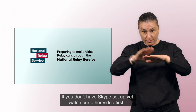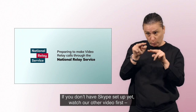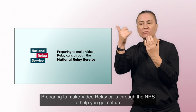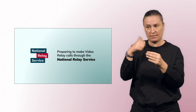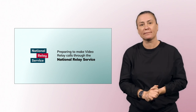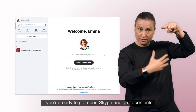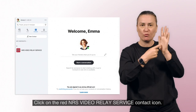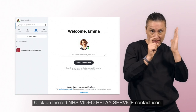If you don't have Skype set up yet, watch our other video first — preparing to make Video Relay calls through the NRS — to help you get set up. If you are ready to go, open Skype and go to Contacts. Click on the red NRS Video Relay Service contact icon.